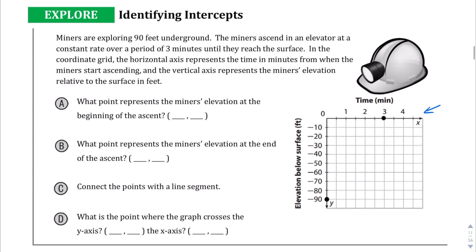Okay, so zooming back out there. So in part A, we're asked what point represents the miner's elevation at the beginning of the ascent? Well, we're told in the context that they're starting 90 feet below the surface. So at minute 0, they're at negative 90 feet. Does that make sense? Since they haven't gone anywhere, they're starting at negative 90 feet.